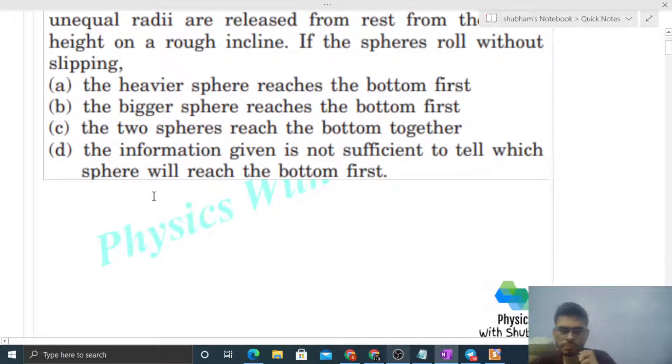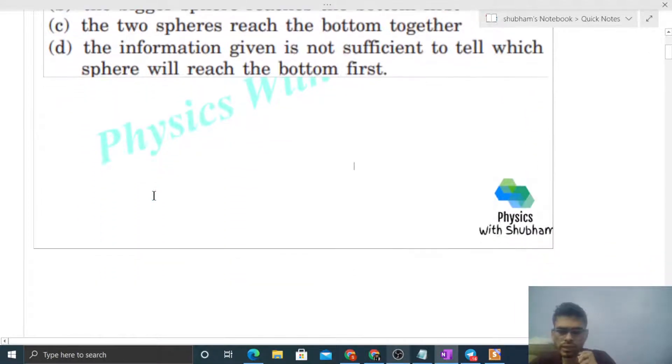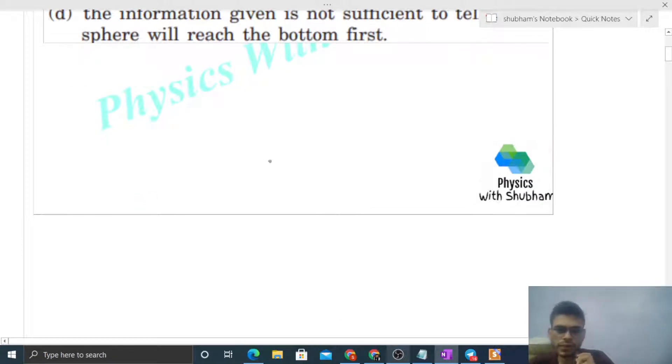We have to compare the time taken by the two spheres. So we can take one sphere with mass m and radius r and find out the time taken by this sphere to reach the bottom. Then we can check the effect of mass and radius on the time.